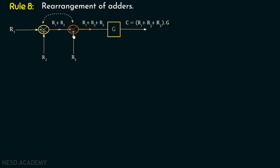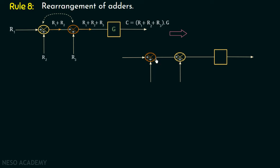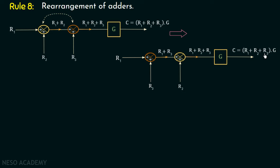If the block has gain g, the final output is c equal to r1 plus r2 plus r3 multiplied with g. Now if we want to rearrange these two adders — shifting one to the left and the other to the right — let us check this. After rearrangement, the first adder takes r1 and r3, giving r1 plus r3, then the second adder adds r2, giving r1 plus r2 plus r3. The final output is still c equal to r1 plus r2 plus r3 multiplied with g. We can rearrange two side-by-side adders without any change in the output.